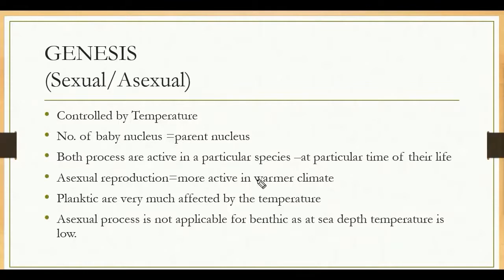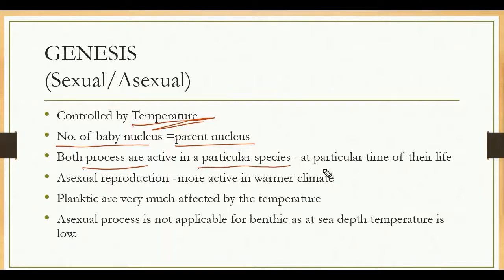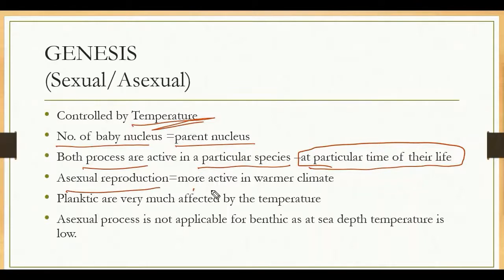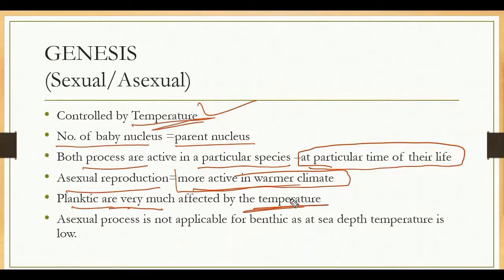The genesis of foraminifera involves both sexual and asexual reproduction. In asexual reproduction, the nucleus divides equally — the parent nucleus equals the offspring nucleus. Both sexual and asexual processes are active in particular species at particular times of their life cycle. Asexual reproduction is more active in warmer climates. Planktonic foraminifera are very much affected by temperature, but asexual processes are less applicable for benthic foraminifera since the sea floor temperature is quite different.